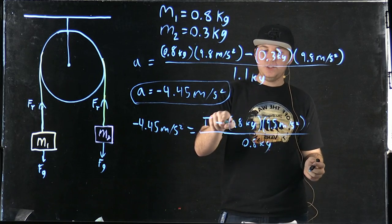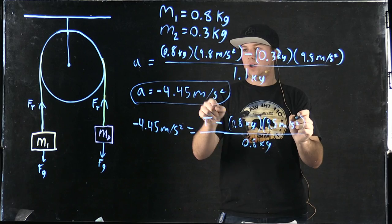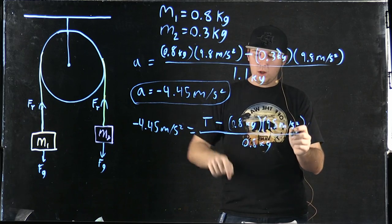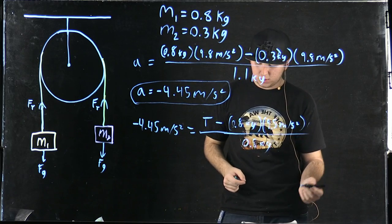So what we did here is the tension minus the force caused by the mass of object 1, divided by the mass of object 1.